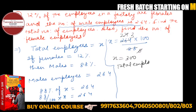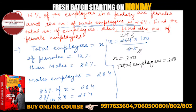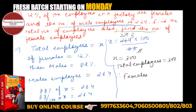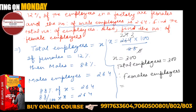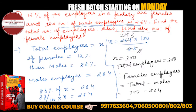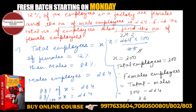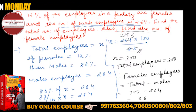So, the total number of employees is 300. The number of female employees is total minus male: 300 minus 264 equals 36 female employees. I hope everyone understood each of these things clearly. Very good!